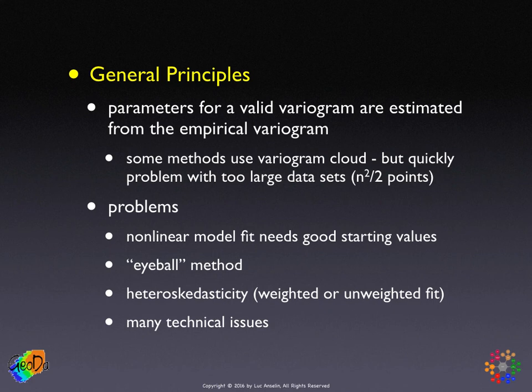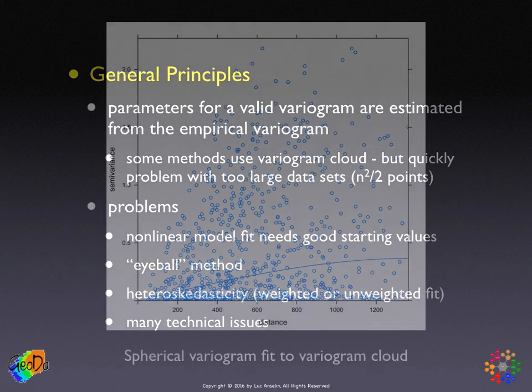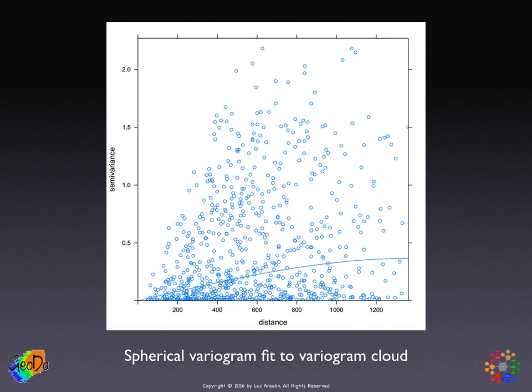Just to give you an idea, here are a few slides that illustrate the process. First, we look at the variogram cloud plot and fit, by nonlinear minimization, some curve through it. We take the specification of the spherical variogram and figure out the nugget, the sill, and the range. As you can see in this example, this doesn't necessarily work that well.